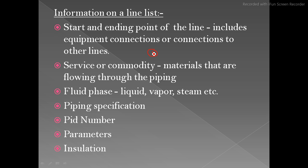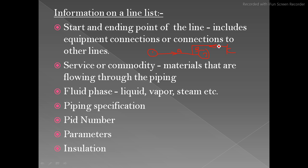For example, if you have one equipment here and a second equipment here, and a line connects from one to the other with a flow arrow going this way — and your line number is A — and you have a header where line C connects and the flow arrow is coming in: the starting point is where the flow comes out, and the end point is where it connects to. So line C will be 'from' and line A will be the connection point. The from-and-to tells you the starting and ending point based on flow direction.